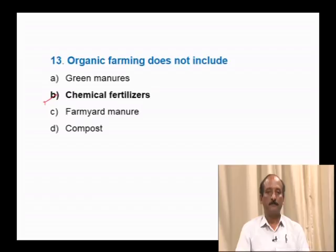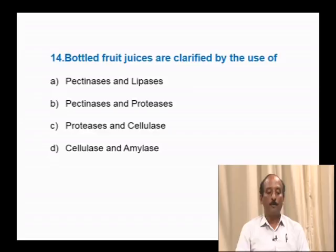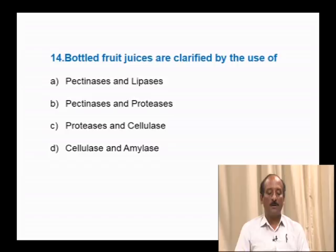Question number 14: Bottled fruit juices are clarified by the use of — potassium herbs, pectinases, pectinases and proteases, proteases and cellulase, cellulase and amylases. Bottled juice is clarified because enzymes degrade the protein and pectin content in the juice. The most common enzymes used to clarify bottled juice are pectinases and proteases. The correct answer is option B.